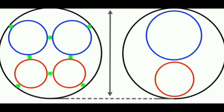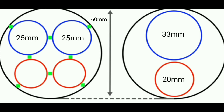Consider two cylinders with the same bore diameter of 60 millimeters. The first is a two valve cylinder where the inlet valve is 33 mm in diameter and the outlet valve is 20 mm in diameter. The second is a four valve cylinder where the two inlet valves are 25 mm each and the two outlet valves are 20 mm each in diameter.